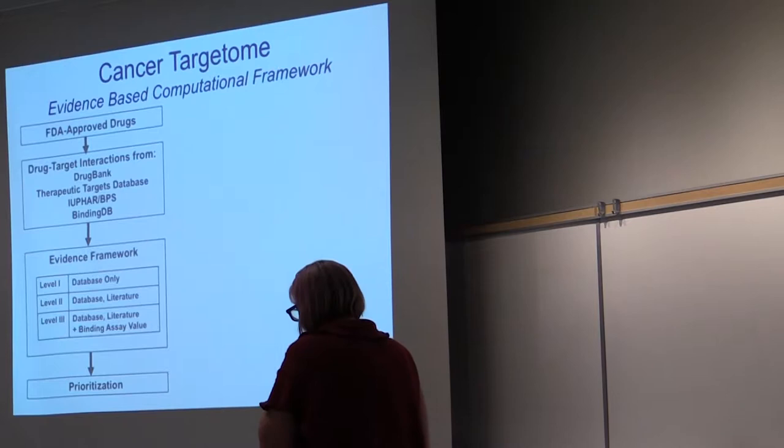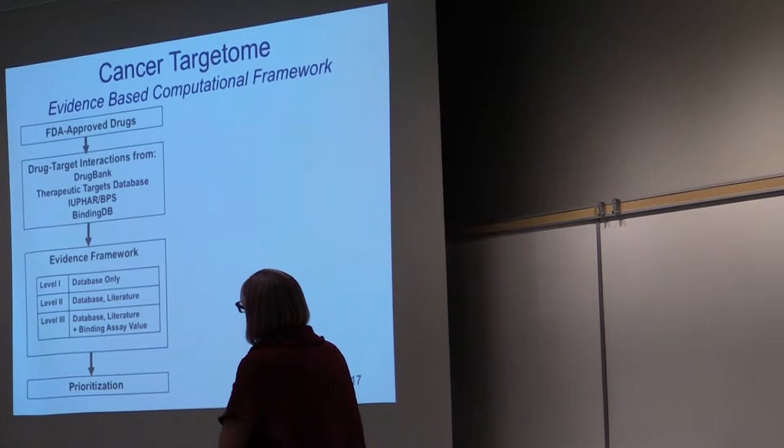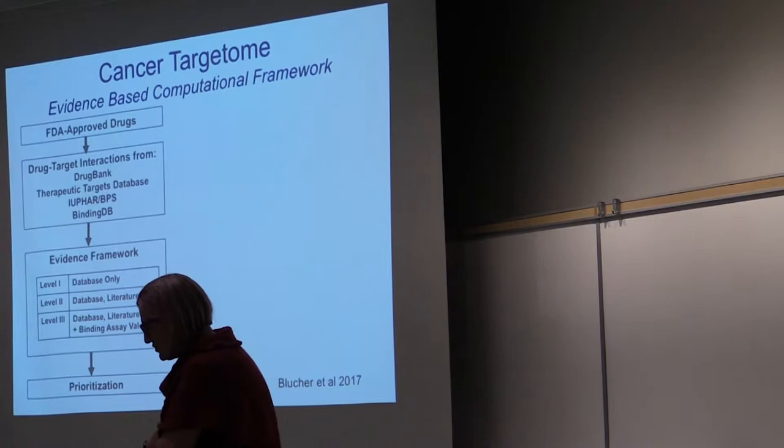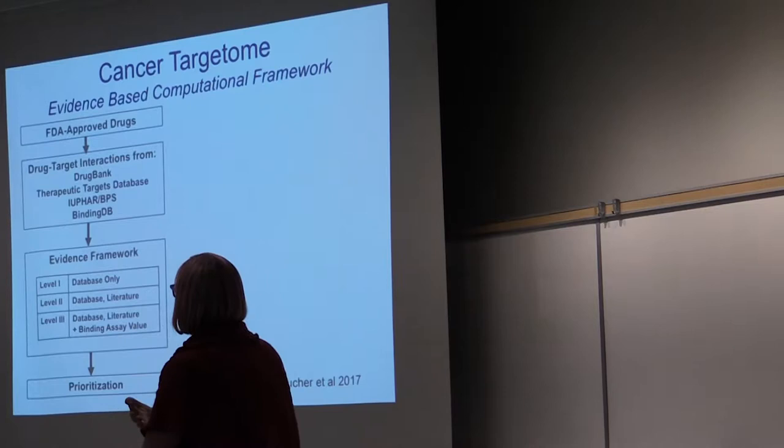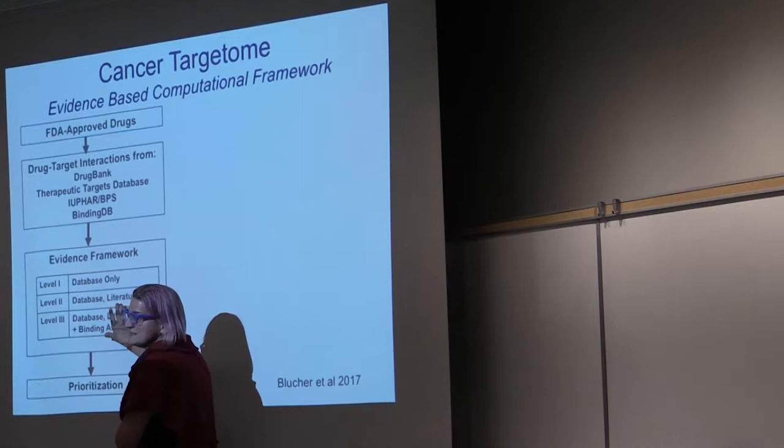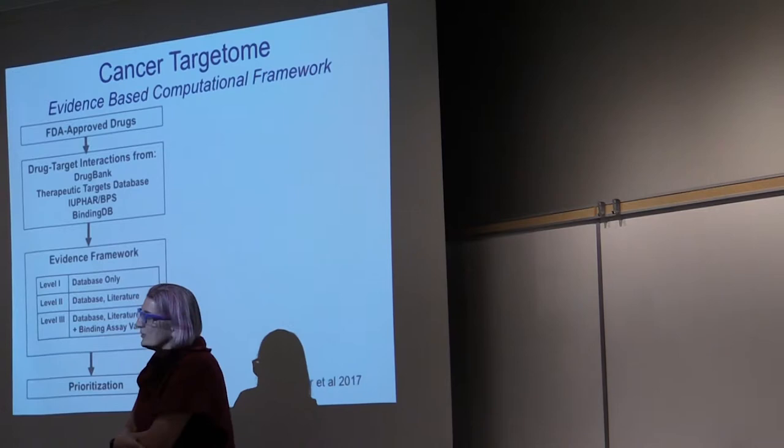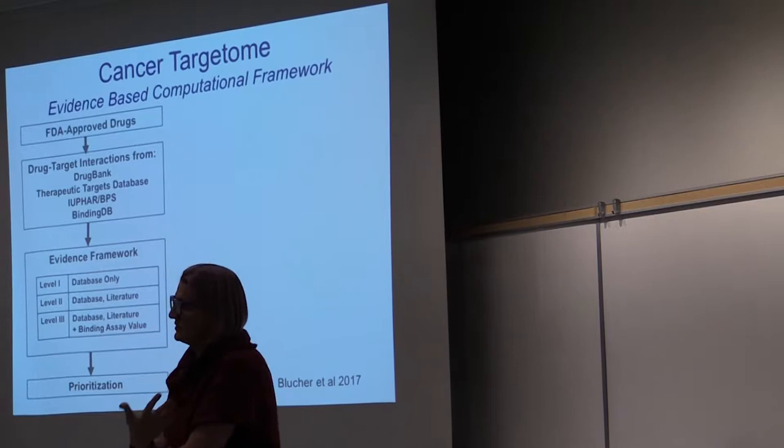So this led, this is work that was led by Aurora Blucher, who at the time was a PhD student in my lab, to develop a framework which we call the cancer targetome. The whole idea was to be able to aggregate drug target interactions from a number of public repositories and build an evidence framework that would allow us to have some idea of confidence and certainty in the data. You see these different levels. What's very important to understand is that at level three, we get into not just evidence and provenance, but very importantly, quantitative values around the actual various assays that were utilized. That is critical for prioritization and modeling.